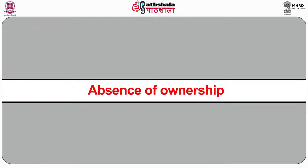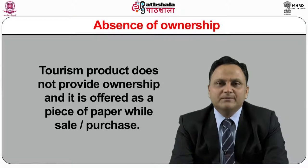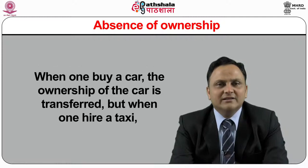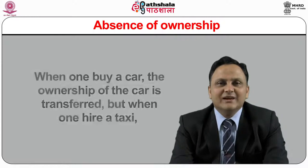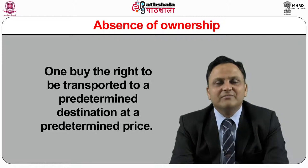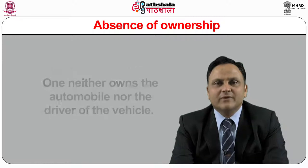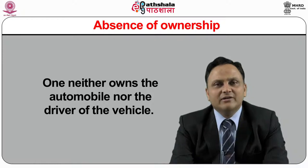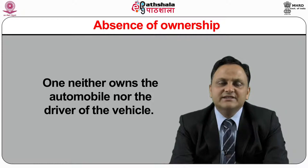The supply of a tourism product is fixed in the short run and can only be increased in the long run following increased demand patterns. Absence of ownership. Tourism product does not provide ownership and it is offered as a piece of paper while on sale or purchase. When one buys a car, the ownership of the car is transferred. But when one hires a taxi, one buys the right to be transported to a predetermined destination at a predetermined price — one neither owns the automobile nor the driver of the vehicle. Similarly, hotel rooms, airline tickets, etc. can be used but not owned. These services can be bought for consumption but ownership remains with the provider. A dance can be enjoyed by viewing it, but the dancer cannot be owned after purchasing tickets of that dance show.